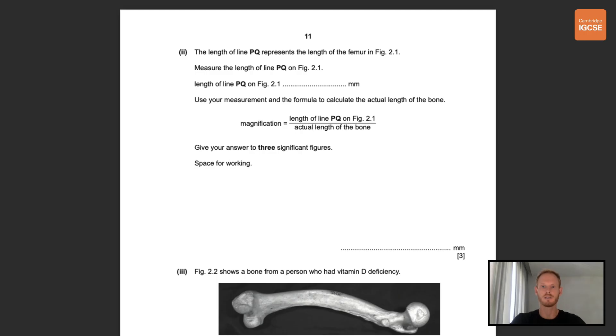The length of line PQ represents the length of the femur in figure 2.1. Measure the length of line PQ in figure 2.1. Now the correct answer here is 140 millimeters and you get a margin of error of plus or minus one millimeter. Use your measurement and the formula to calculate the actual length of the bone and give your answer to three significant figures. So we're going to need to rearrange the equation here as the actual length is on the bottom of the equation provided. The formula triangle shows us that the actual size is equal to image size, that is length of line PQ, over magnification which is 0.3. So 140 divided by 0.3 is 467 millimeters when rounded to three significant figures.